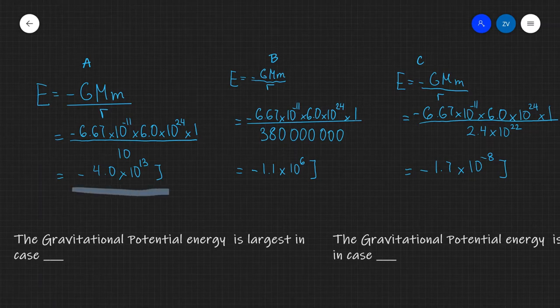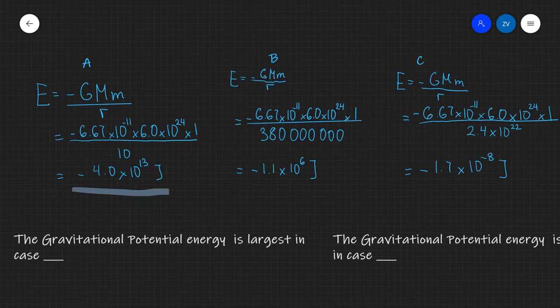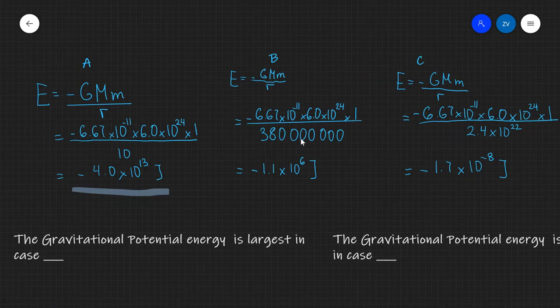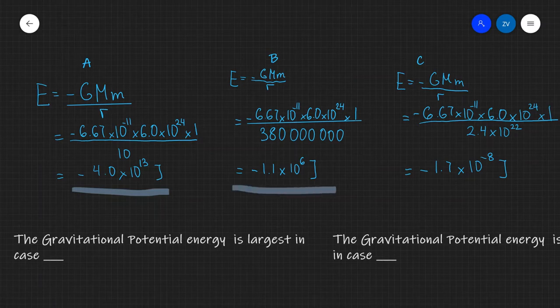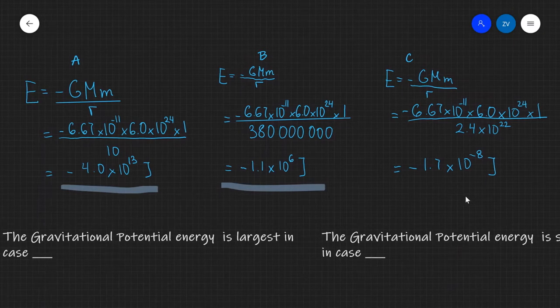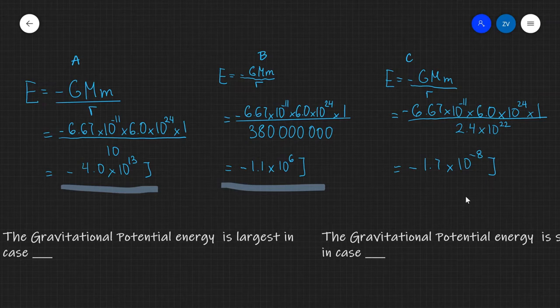If you have gotten this answer correctly you can give yourself a tick and for B case B which is at 380,000 kilometers, the answer is minus 1.1 times 10 to the 6 and for the final distance which is essentially the distance from the Milky Way our galaxy to Andromeda the gravitational potential energy is minus 1.7 times 10 to the power of minus 8.